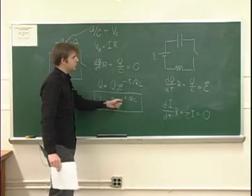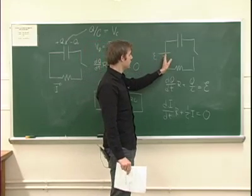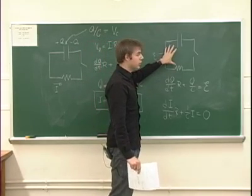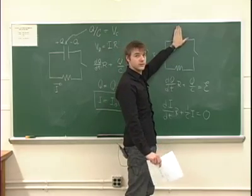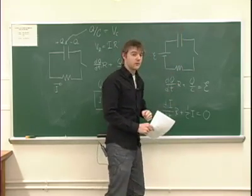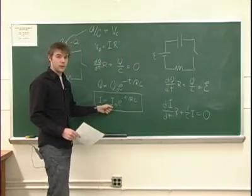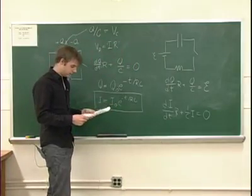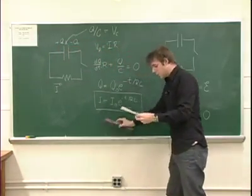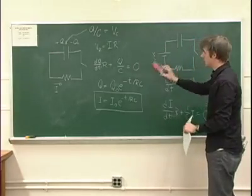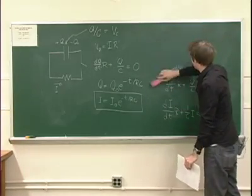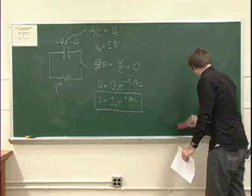That's exactly what you'd expect. Like we mentioned originally, the current in the circuit should start out as if the capacitor wasn't there, and eventually, asymptotically, it should die down to zero — that's exactly what this equation suggests. So this is basically the physics behind the lab. Let's go on and discuss something called semi-log paper.